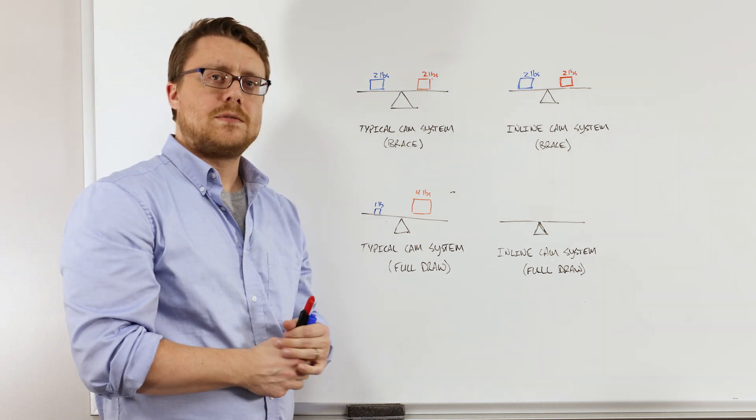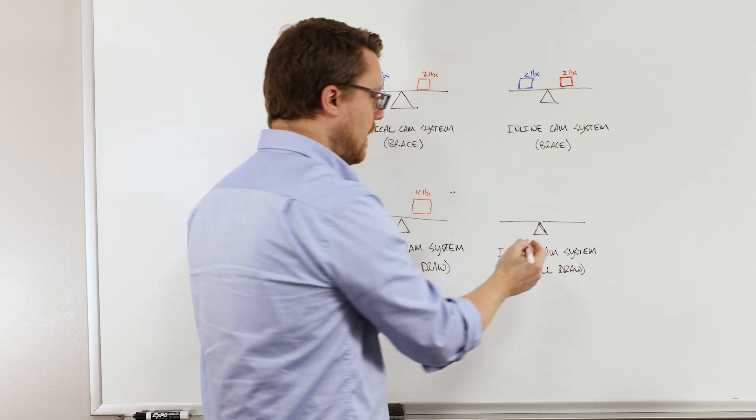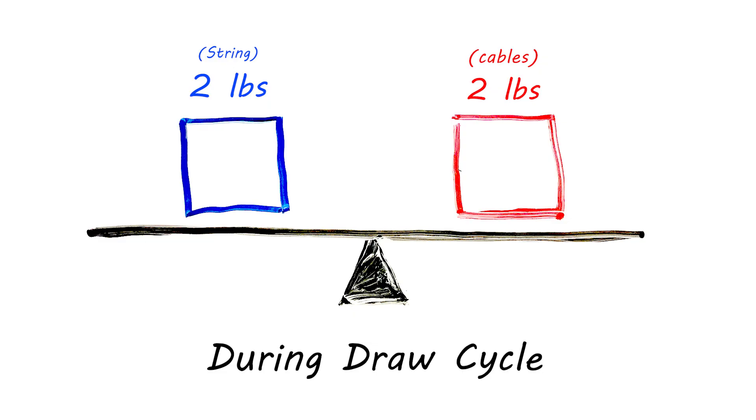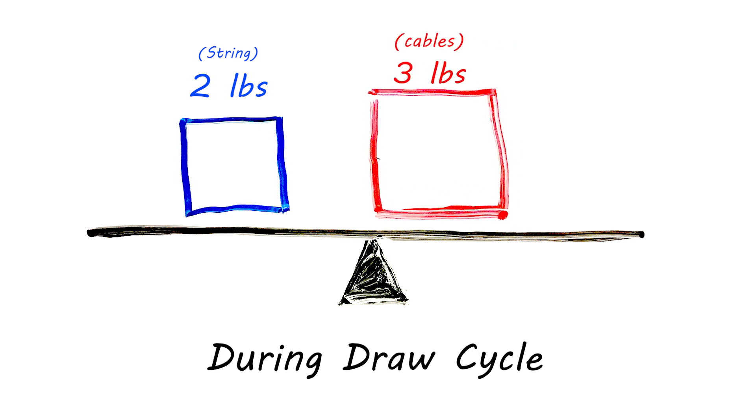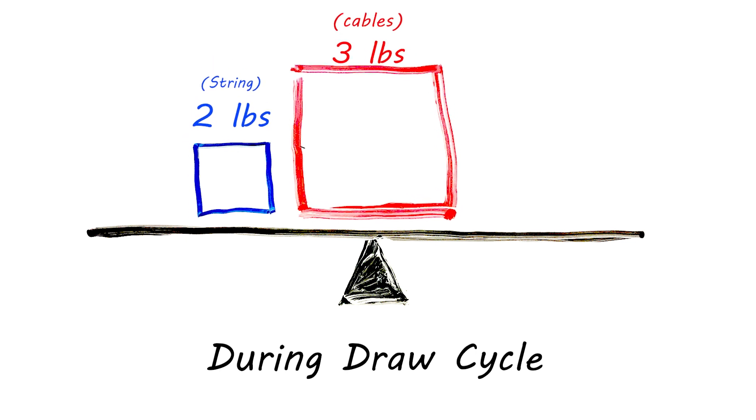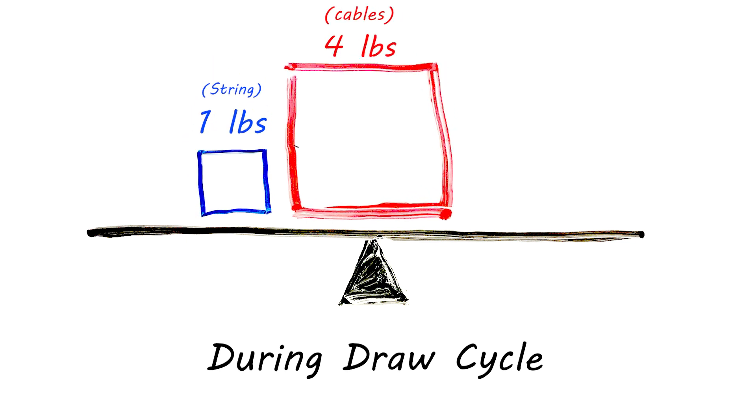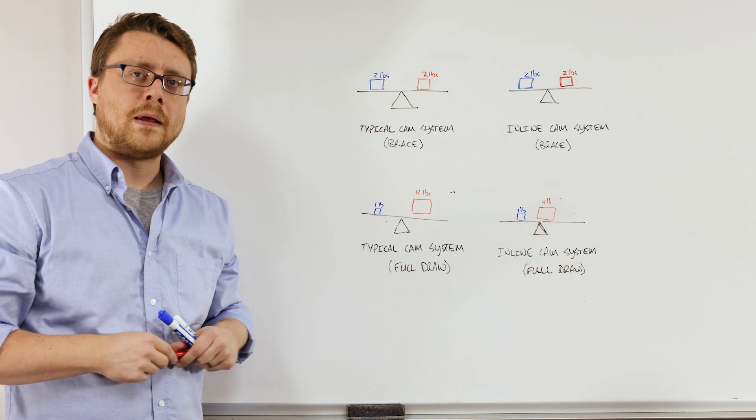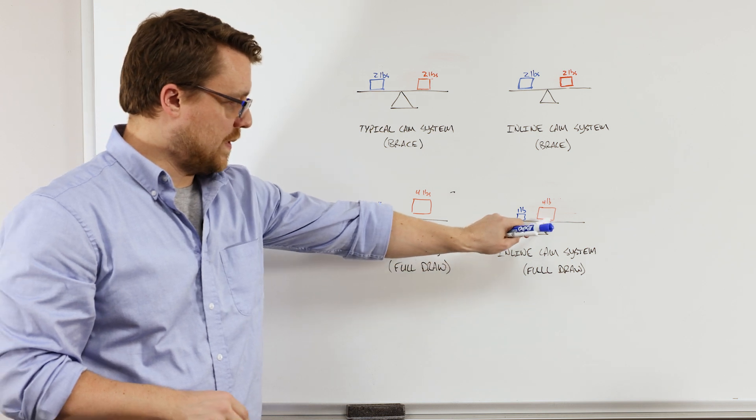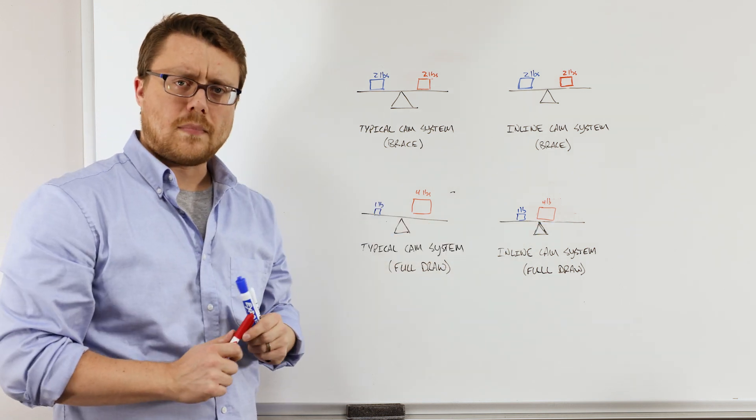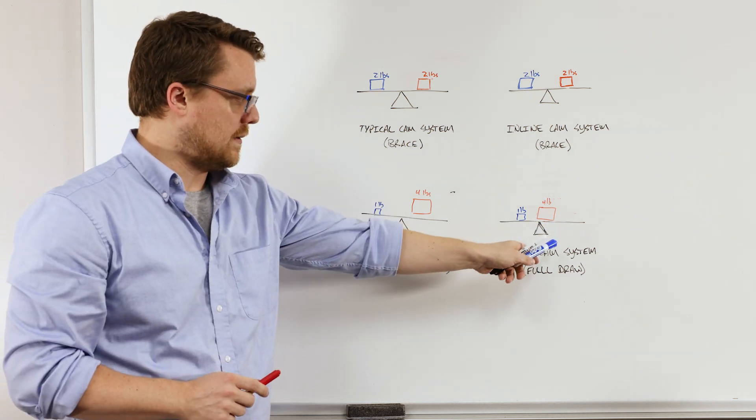How we approach this with the inline cam system, as you draw our bow back, the cable force or red box goes up, and the string force goes down. But instead of leaving the boxes where they are, leaving the forces where they are, we actually slide the cable force over so that it centers a little bit more over the center of the teeter-totter. And because we've moved the position of the cable force, this still balances.